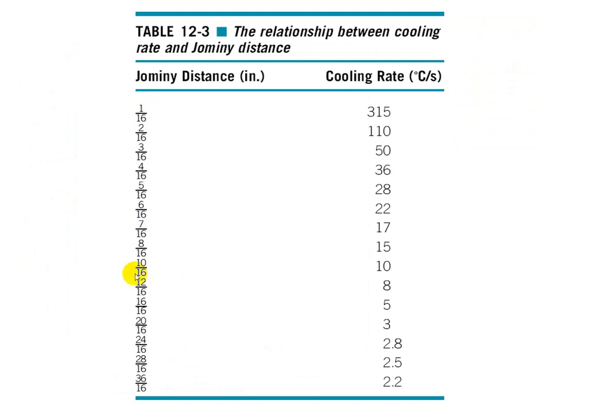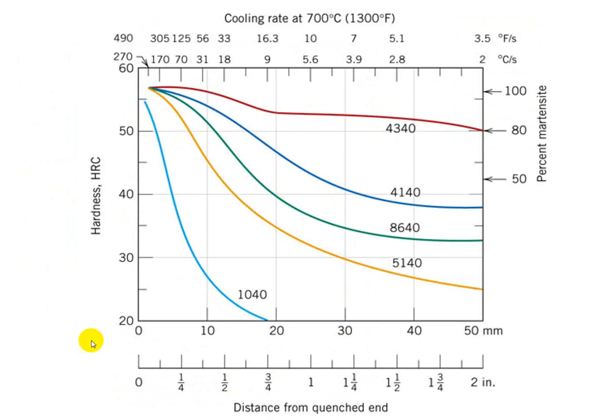Next, referring to the distance in a Jominy and actually cooling rate, closest we have highest cooling rate, the most distance roughly around two inches plus you have the lowest cooling rate. And here is an actual Jominy chart.